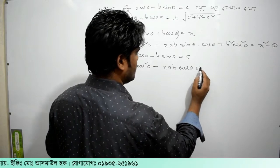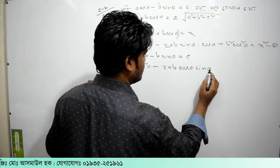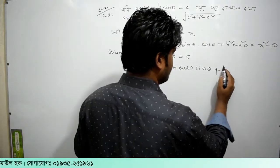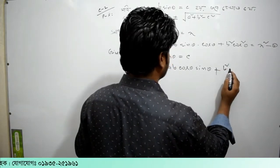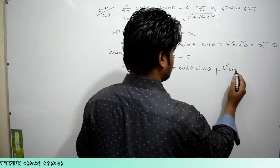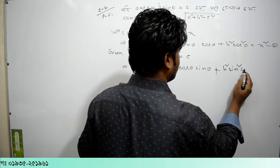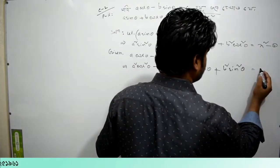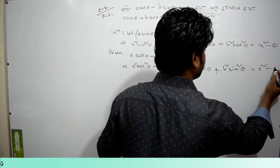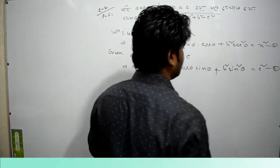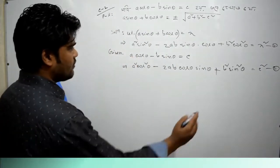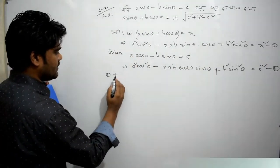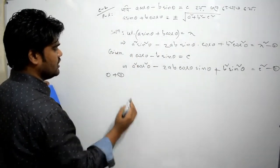a² cos²θ minus 2ab cosθ sinθ plus b² sin²θ equals c² ... (equation 2). So now we add equation 1 plus equation 2.